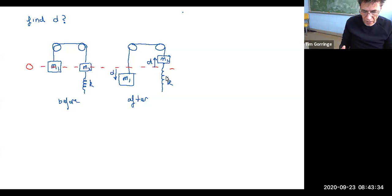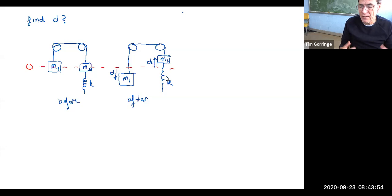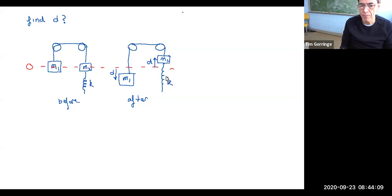At first sight this might look like a horrible problem — you might want to run away from it. It involves a pair of masses, a spring, two pulleys and a string; a lot of moving parts. But it's actually a fantastic example of how what looks like a complex problem can be solved simply using energy methods. It's really a beautiful example of energy approaches.